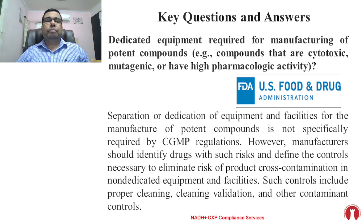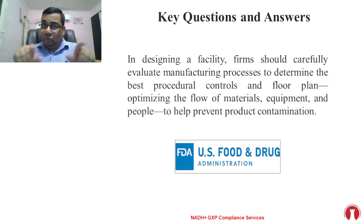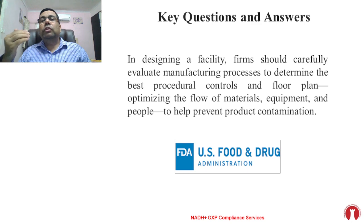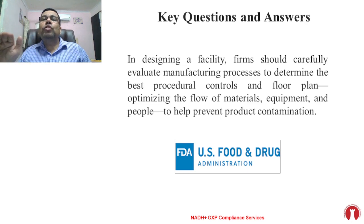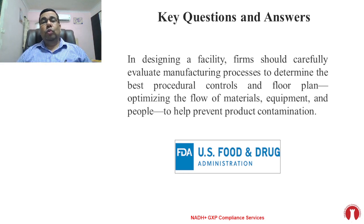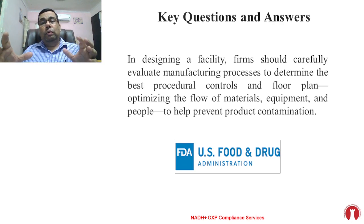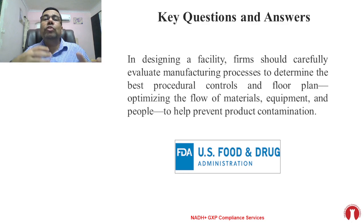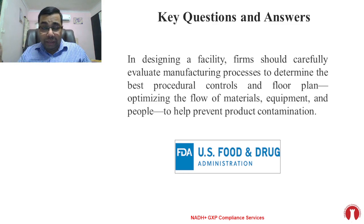Further, FDA specifies that in designing a facility, firms should carefully evaluate manufacturing processes to determine the best procedural controls and floor plan, optimizing the flow of materials, equipment, and people to help prevent product contamination. This indicates that you need to have facility controls as well as procedural controls — the best procedural controls to avoid cross-contamination. This is taken exactly from the US FDA guideline.